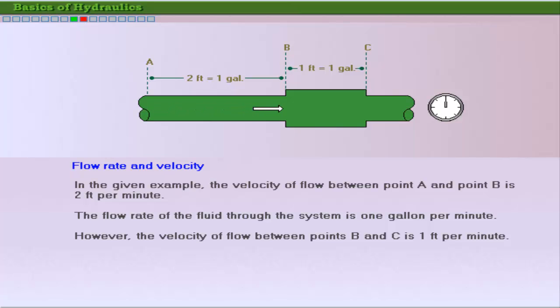Note that the flow rate of the fluid is fixed. The velocity may still change due to the change in the diameter of the pipe. In this example, the velocity of fluid between point B and point C is 1 foot per minute, at a constant flow rate of 1 gallon per minute.